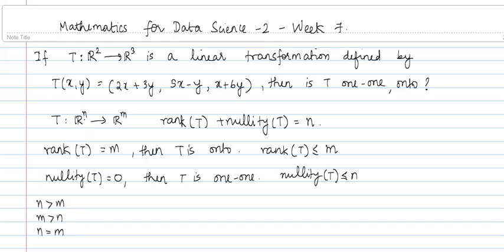If n is greater than m, we know that the dimension of the domain is greater than the dimension of the codomain. In this case, can the linear transformation be 1-to-1? Suppose the linear transformation is 1-to-1, then the nullity is going to be 0, and if the nullity is 0, then the rank of T has to be equal to n to satisfy the rank-nullity dimension theorem.